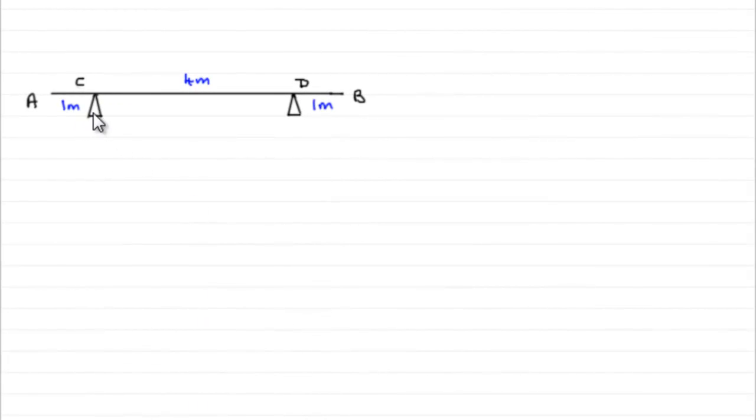Now to start this problem we've got to draw a sketch. I've started with the beam AB. It's six meters long and it rests on these two supports at C and D, one meter in from the end. So that's going to leave us with four meters between C and D.